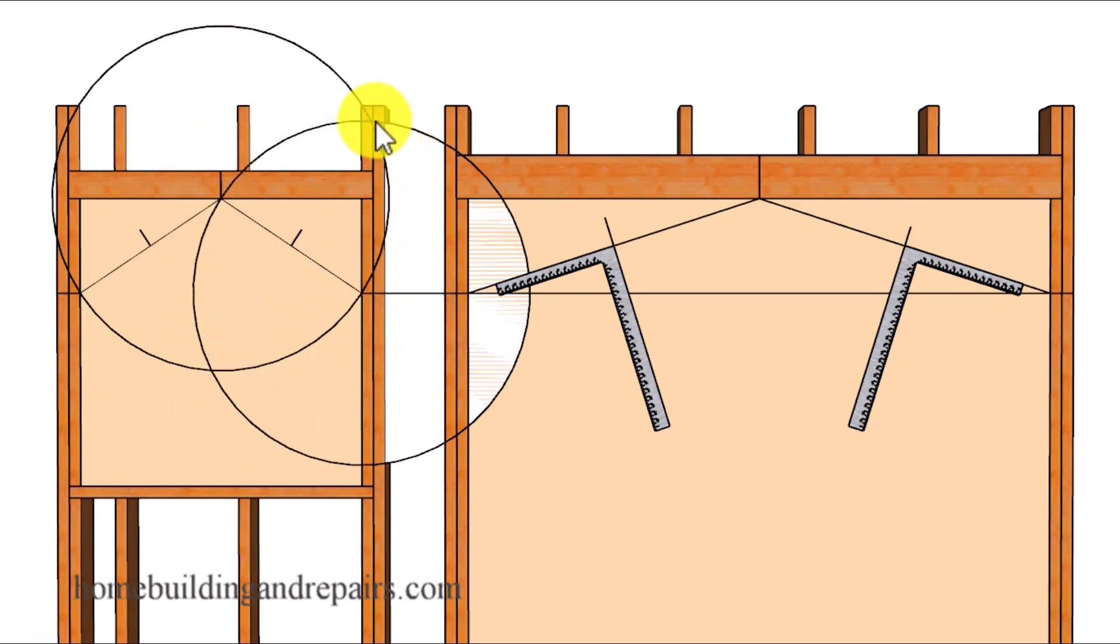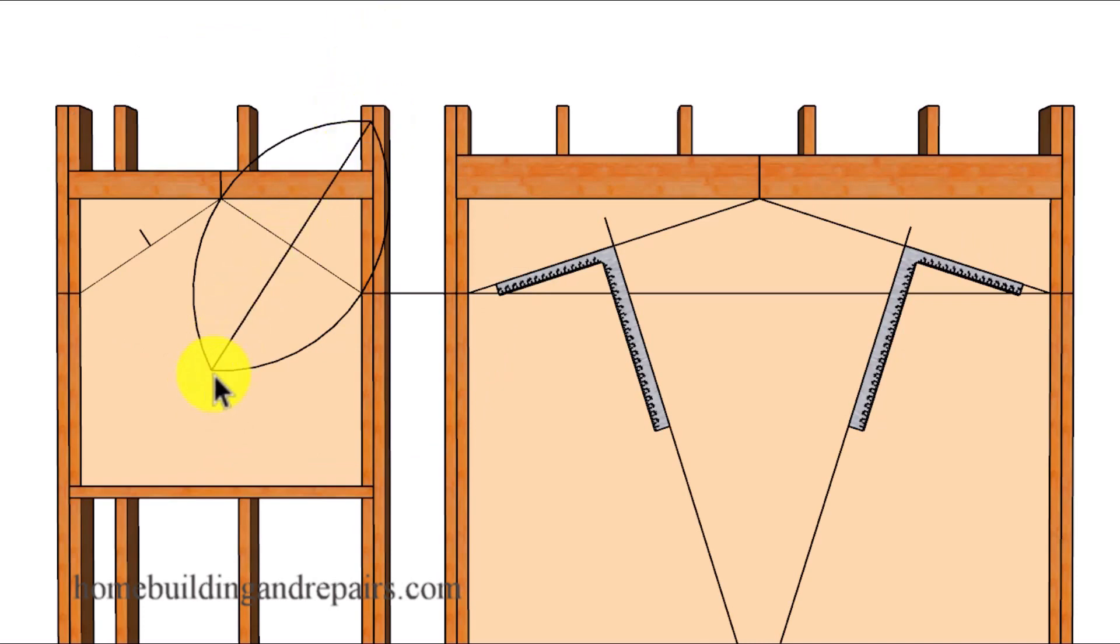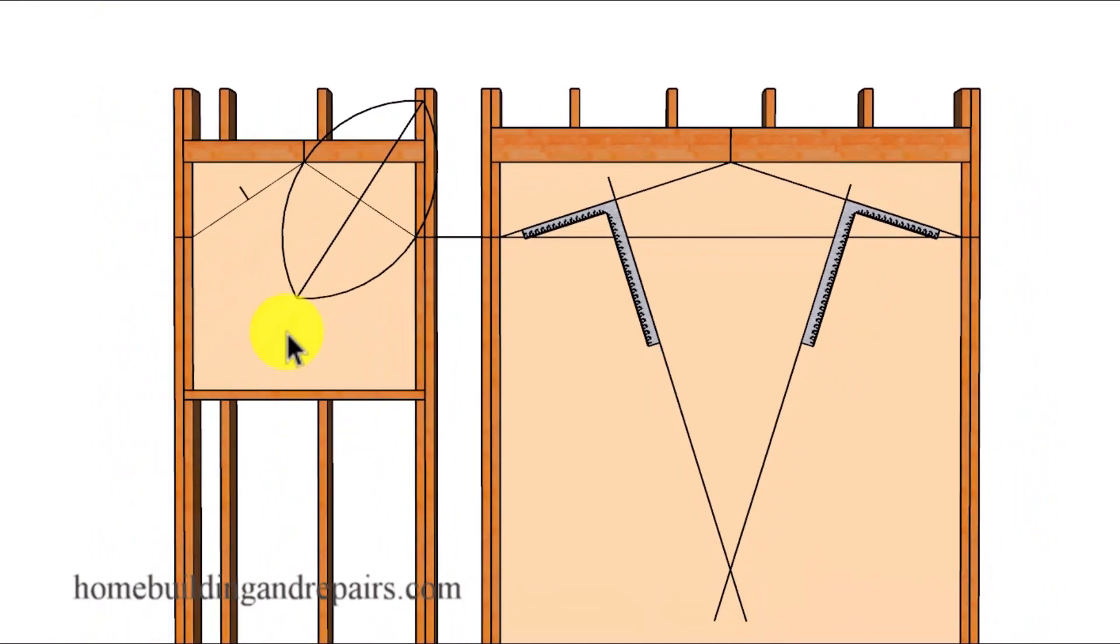The reason why we're doing this is we're going to use these intersecting points to create a straight line. If you use this method, you don't even need to mark the center. You can just go from here to here like I'm going to do. And you can always extend these lines a little further if you need to.